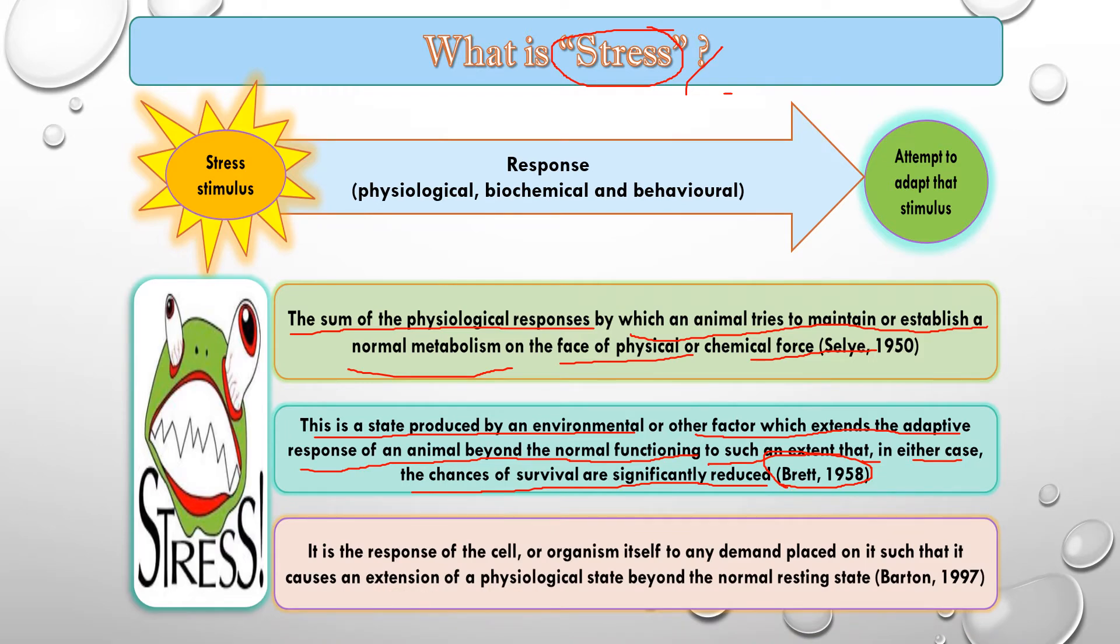After a decade, Barton in 1997 defined stress at a cellular level. He defined stress as a response of the cell or organism itself to any demand placed on it such that it causes an extension of a physiological state beyond the normal resting state.